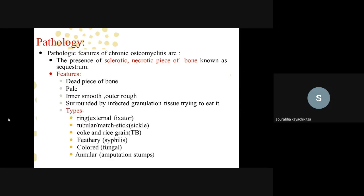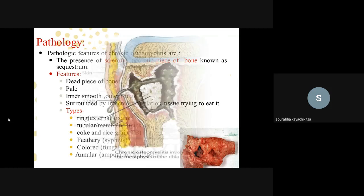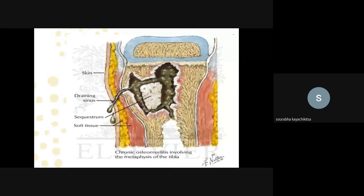In chronic osteomyelitis there is a dead piece of bone called sequestrum, which is pale in nature with an inner smooth and outer rough area, surrounded by infected granulation tissue. The sequestrum may appear as ring-like, tubular, matchstick-like, cork, rice-grain-like, feathery, or annular forms. A skin draining sinus is present. Chronic osteomyelitis is most commonly seen in the metaphysis of the tibia, as shown in the X-ray image.